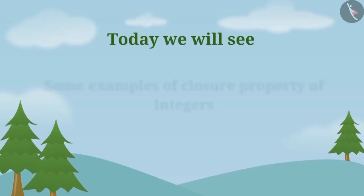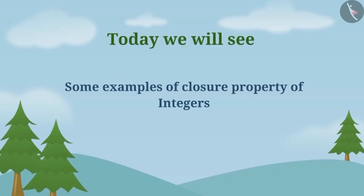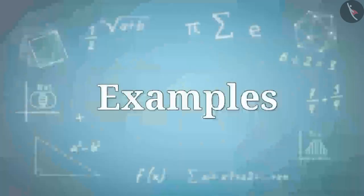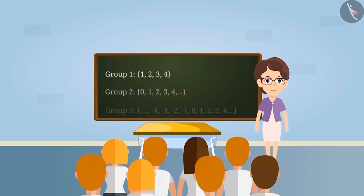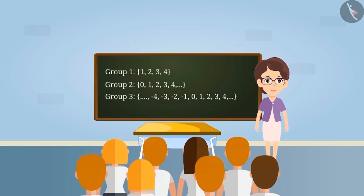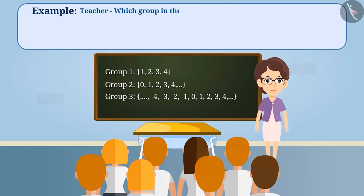Today we will see examples of the closure property of integers. One day, a teacher made the following three groups of numbers on the blackboard and asked the children: which group in the given groups is closed under subtraction?